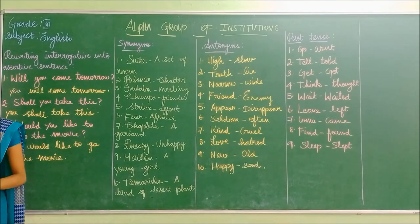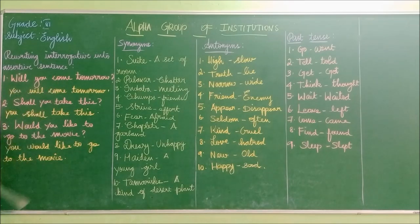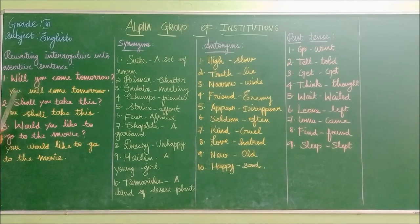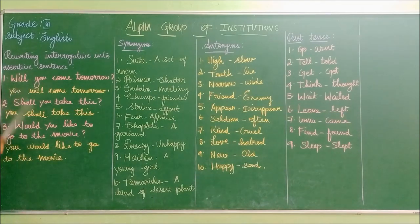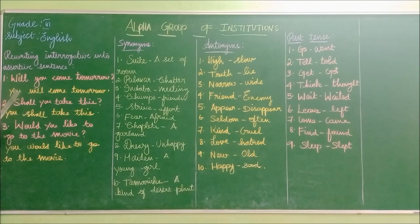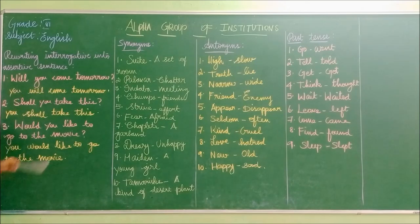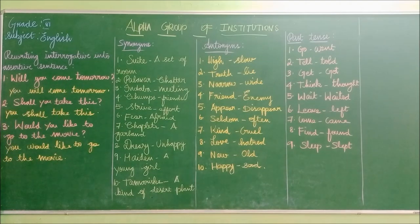While changing an interrogative sentence into an assertive sentence, we have to start with the subject. The subject in 'Will you come tomorrow?' is 'you.' After the subject, write the modal verb — will, shall, can, could are modal verbs. After 'you,' write 'will,' then write the main verb 'come tomorrow.' So the assertive sentence becomes: 'You will come tomorrow.'